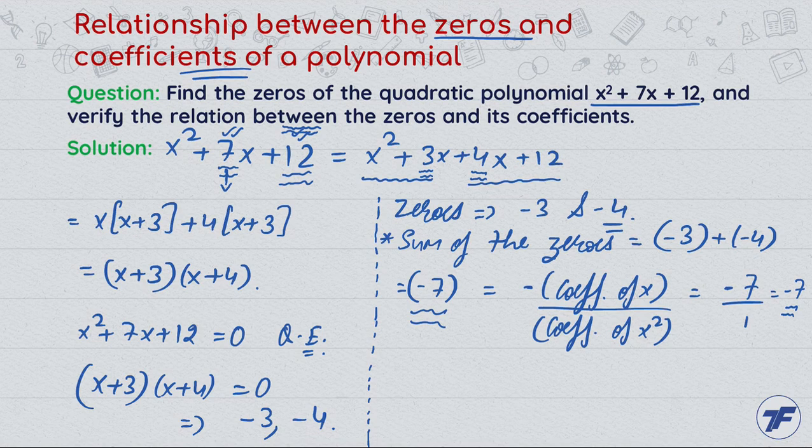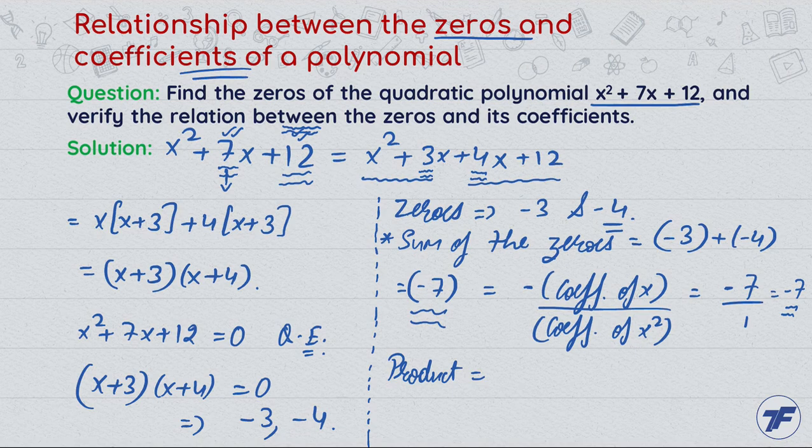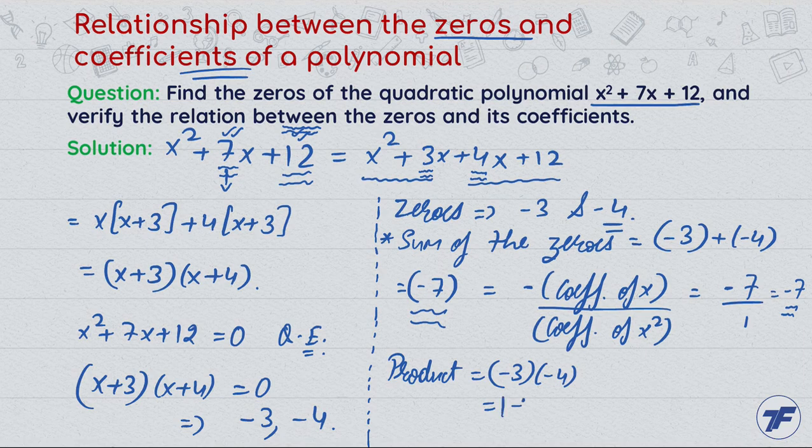Now let's talk about the product of the zeros. Product of the zeros: (-3) × (-4). What is the value? It will be 12.